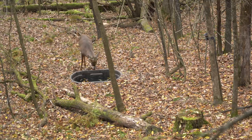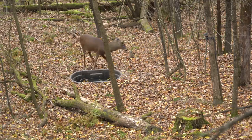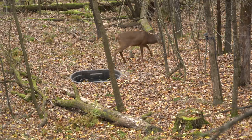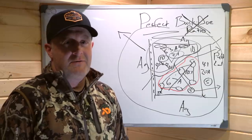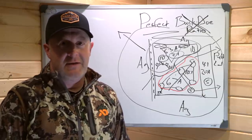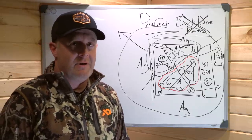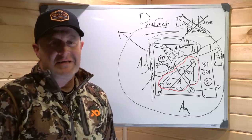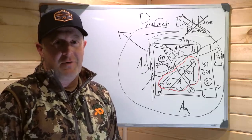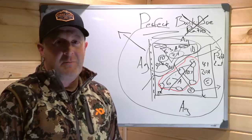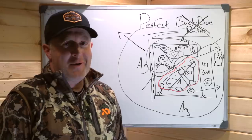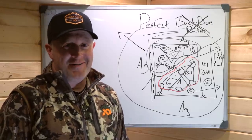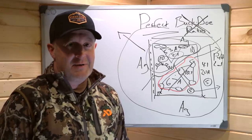Think about those three properties, and throw the buck-to-doe ratio concept out the window — look at it as a neighborhood function. It's really a function of how you manage hunting pressure and how you link habitat improvements to create a daylight deer herd with a decent buck-to-doe ratio. Never settle for 10, 5, or 15 does to every buck. Try to be that balanced parcel and be a true herd influencer. If you are, you'll see more balanced ratios and just as many mature bucks during daylight as at night.